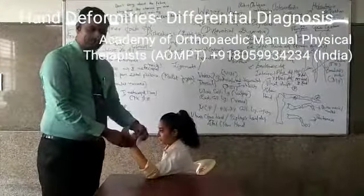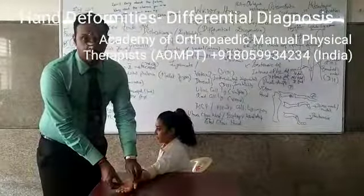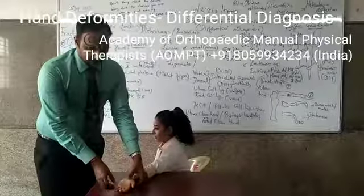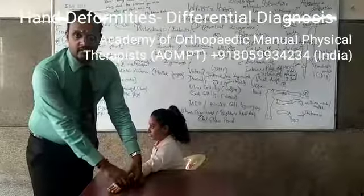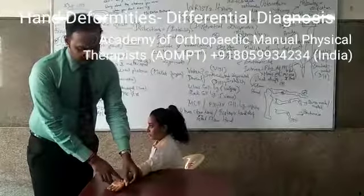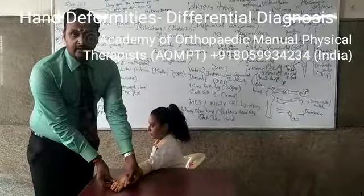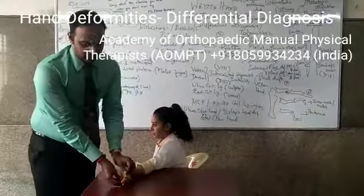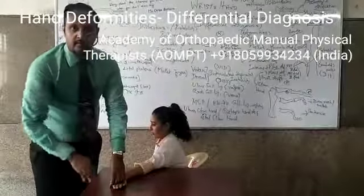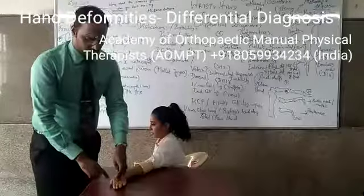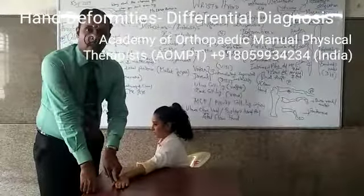Coming to the thumb, the thumb is normally facing medially — it is rotated and not in the plane of the other fingers. The other fingers flex and extend in the sagittal plane, while the thumb flexes and extends in the frontal plane. If the thumb is laterally rotated, it comes into the plane of the other fingers. This is similar to the ape thumb. Because apes use the upper limb for locomotion, the thumb is laterally rotated. Ape thumb deformity comes because of atrophy and weakness of opponens pollicis.